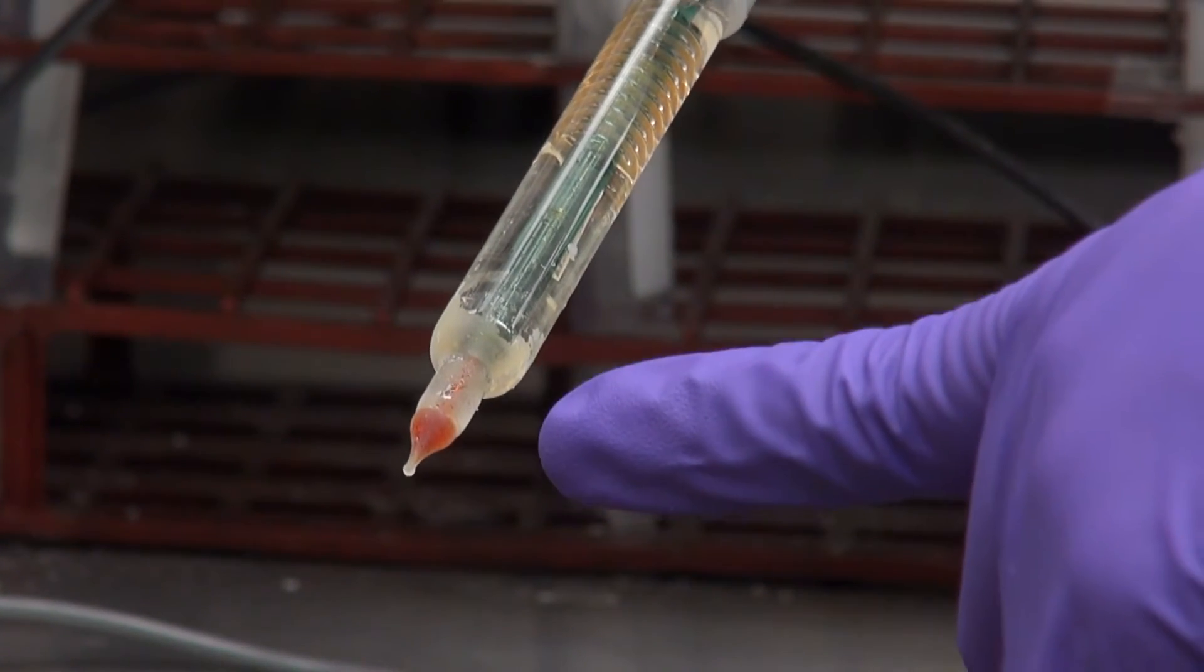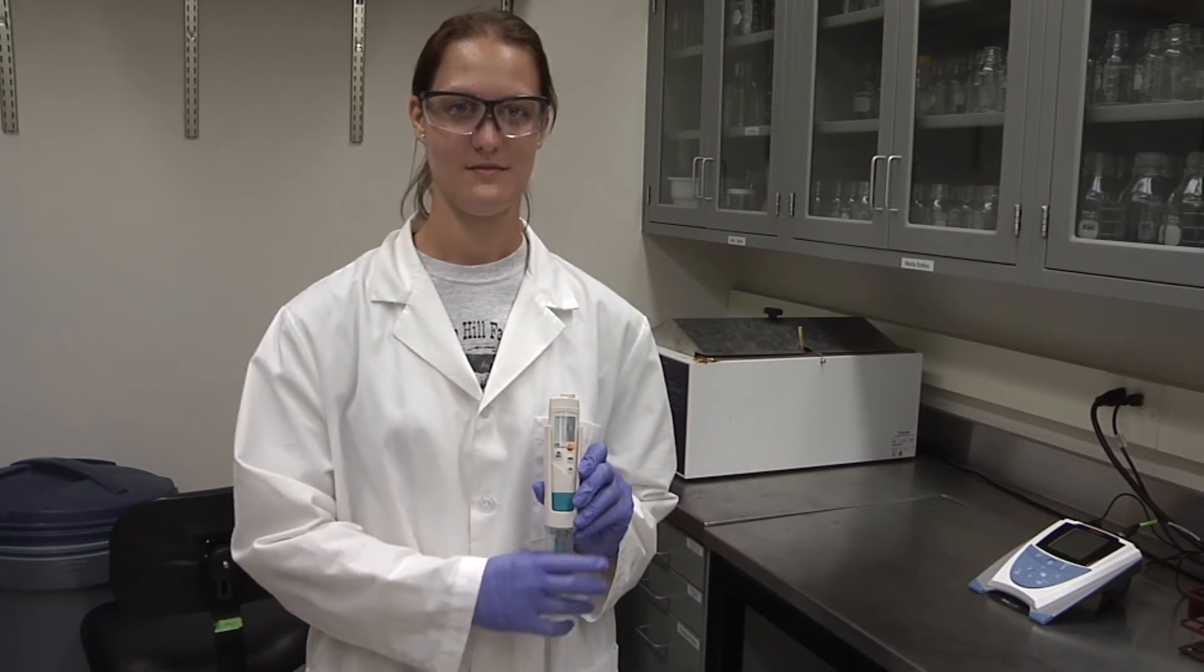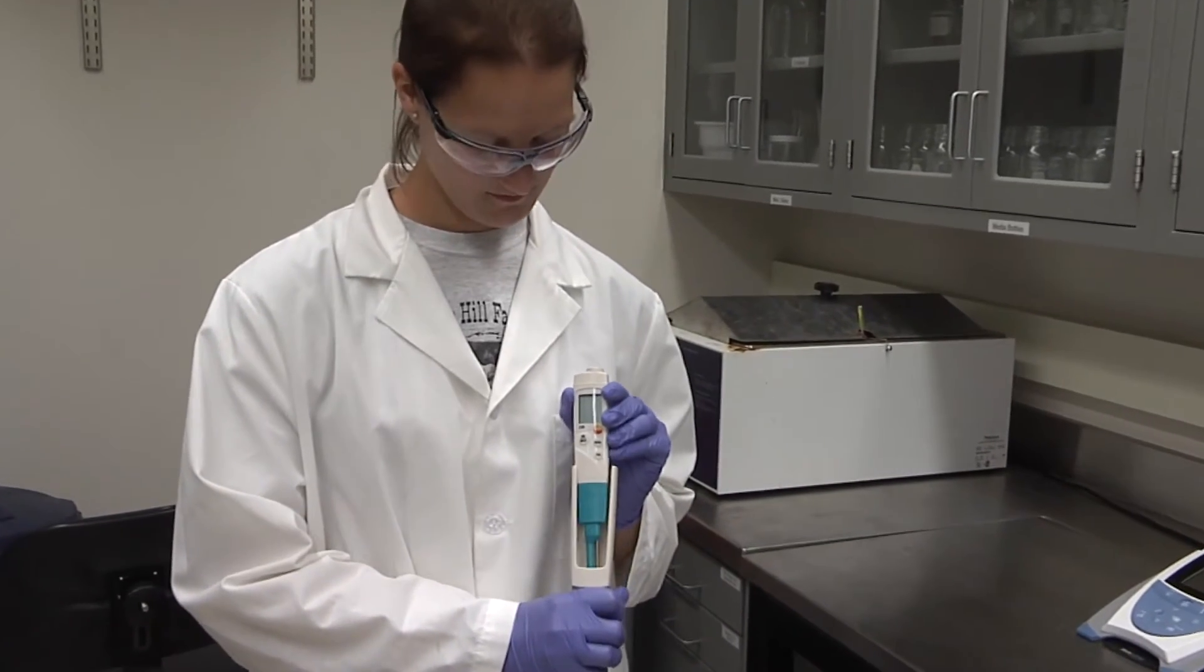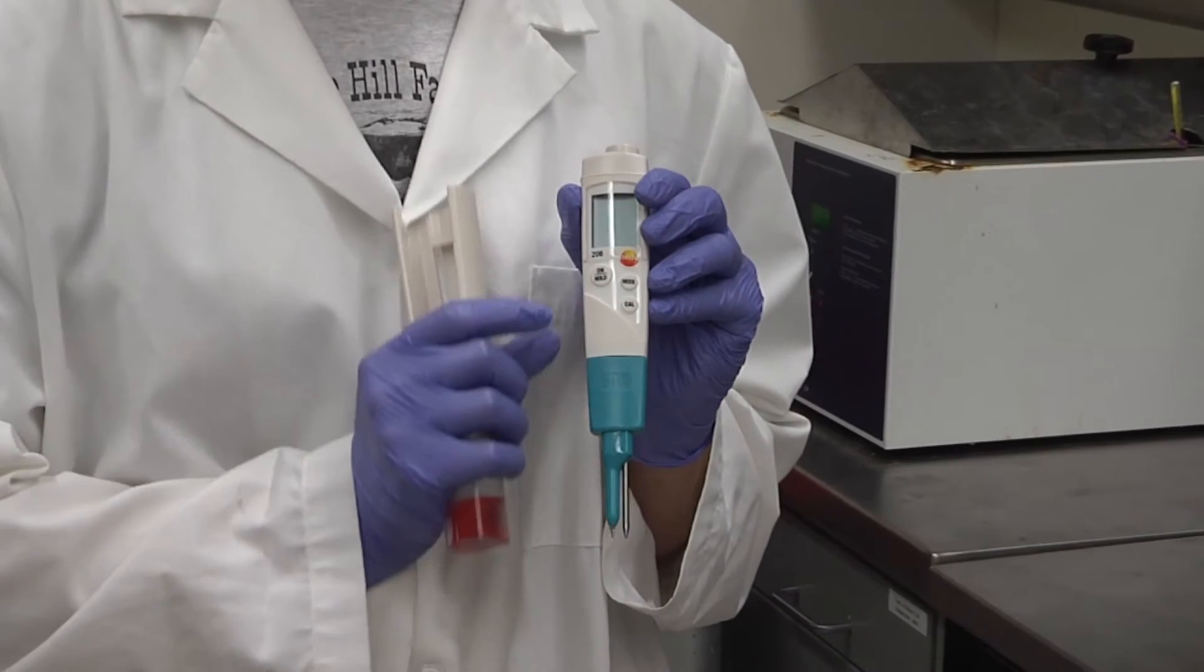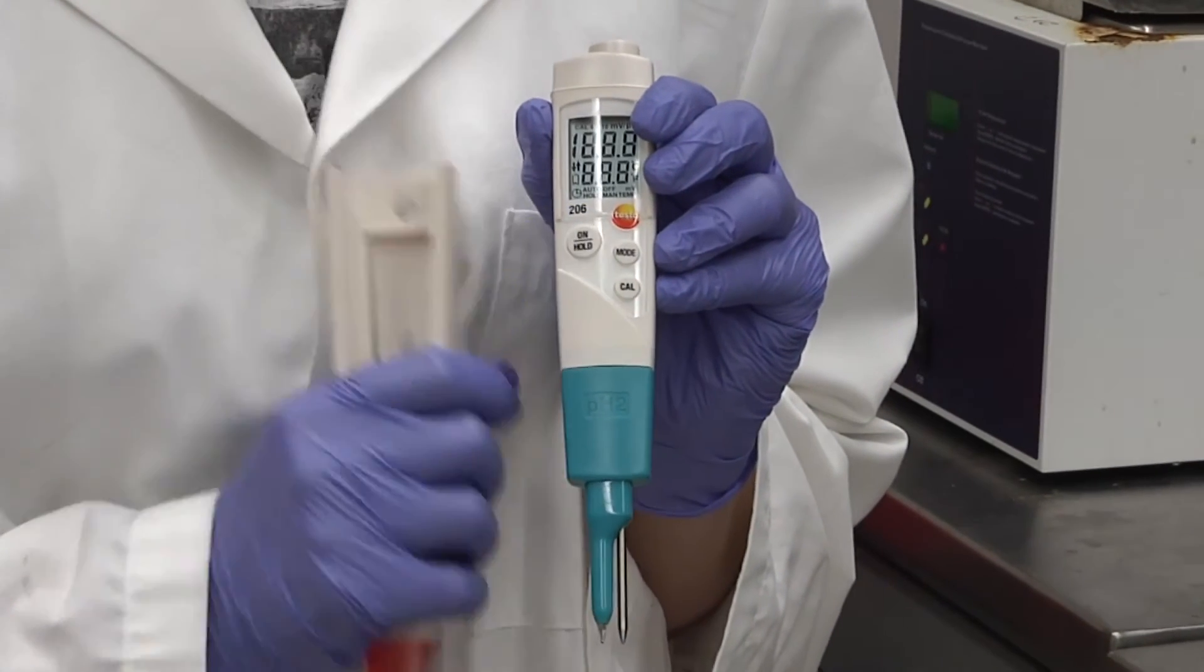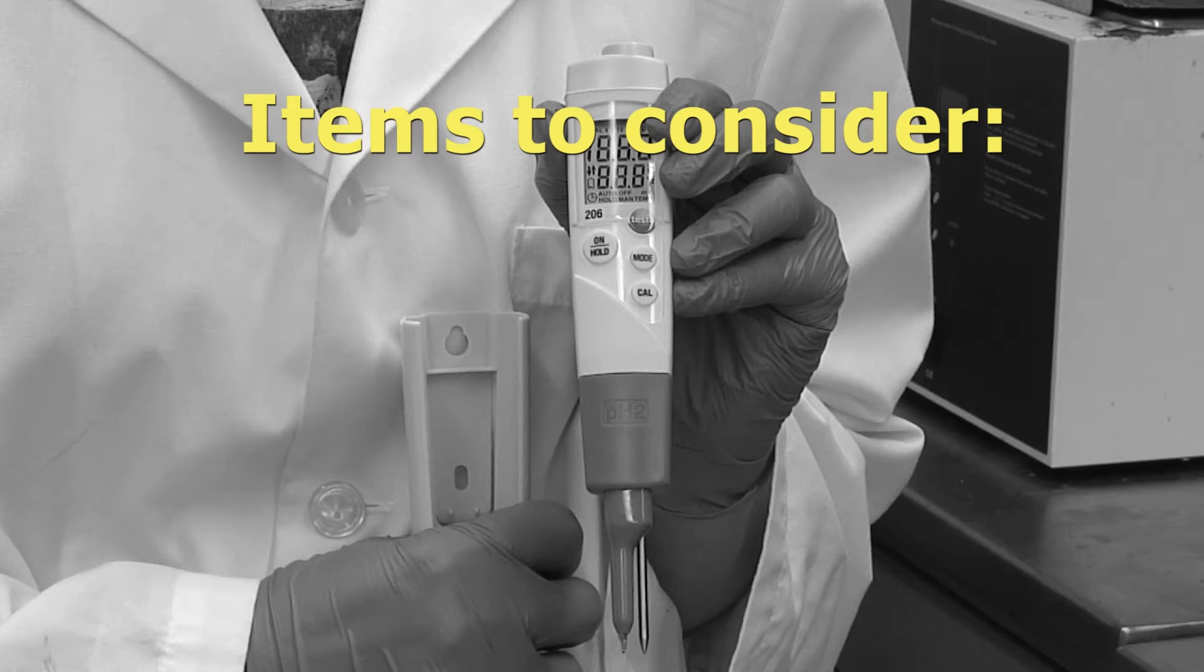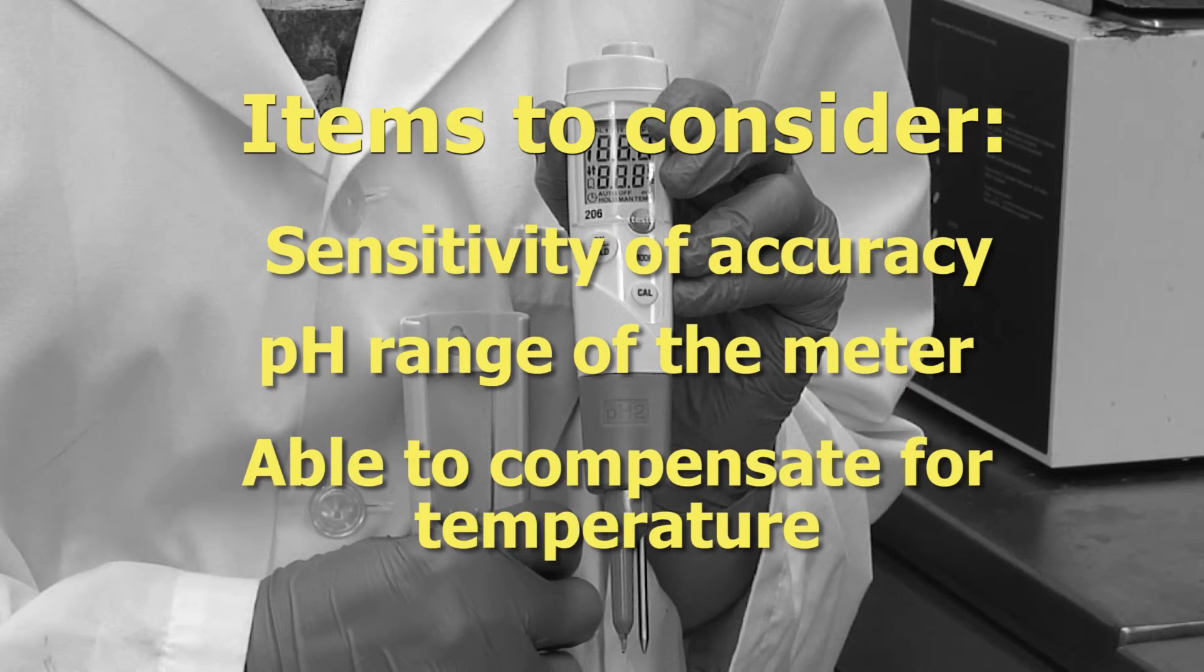Portable meters are ideal for the cost-savvy individual or where pH measurements need to be made in a variety of locations in your facility. When deciding upon the appropriate meter for your needs, consider more than just the costs of the meter. Items to consider when choosing a portable meter include the sensitivity of accuracy, the pH range of the meter, and if the meter is able to compensate for temperature.